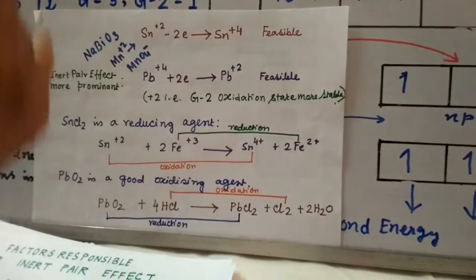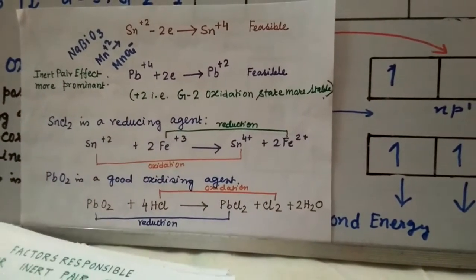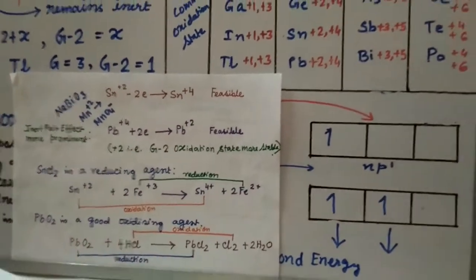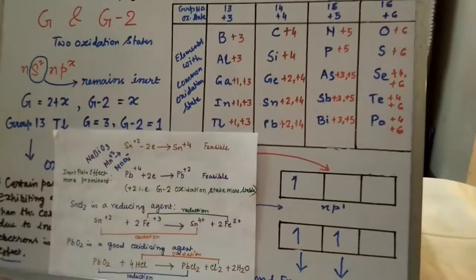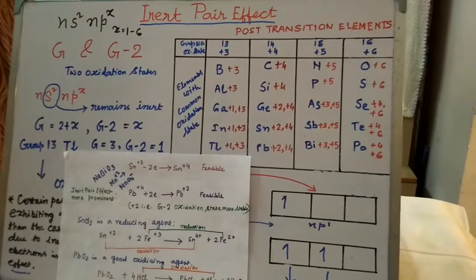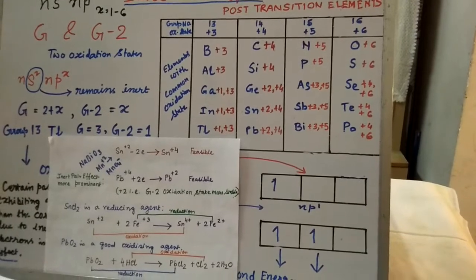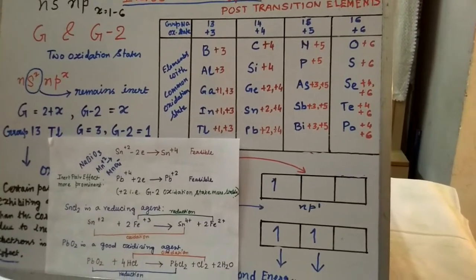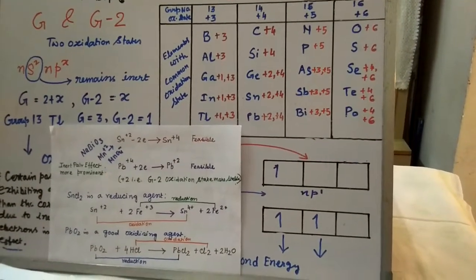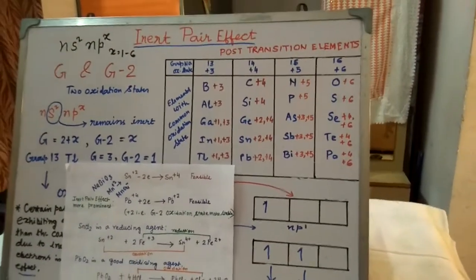These are some examples of the inert pair effect. Today we have learnt what the inert pair effect is, why it happens, and some practical examples showing how the inert pair effect affects the chemical properties of heavier congeners of groups 13, 14, 15, and 16 elements. That's all for today, students. See you in the next class.